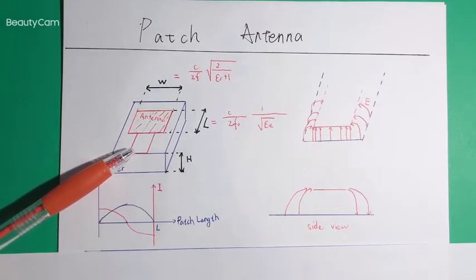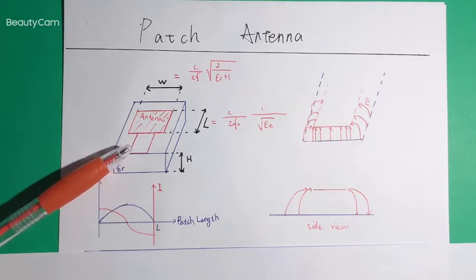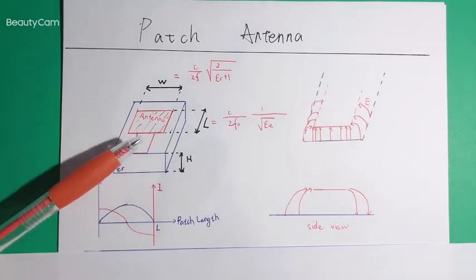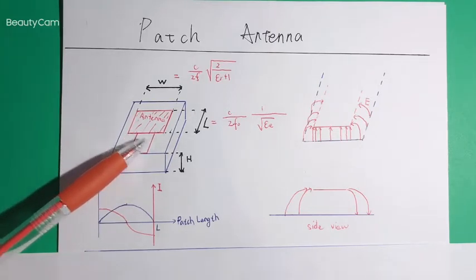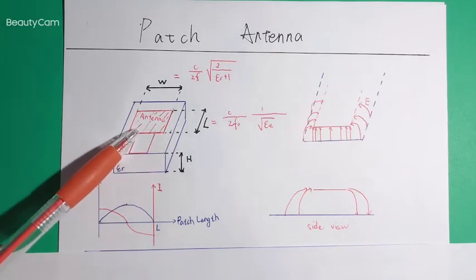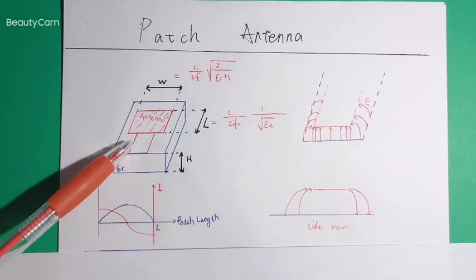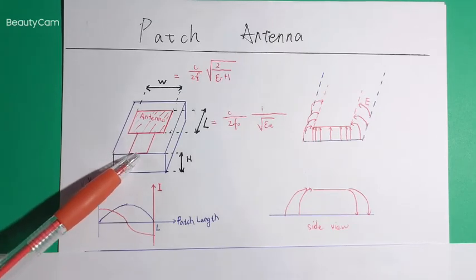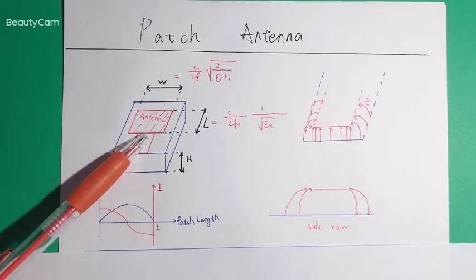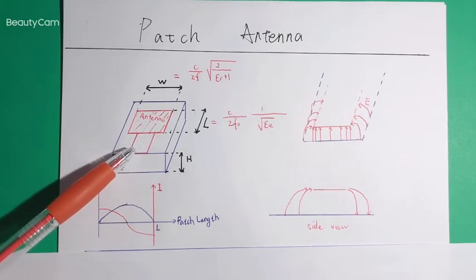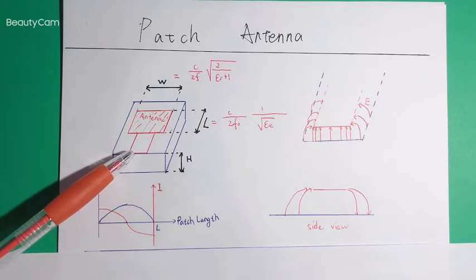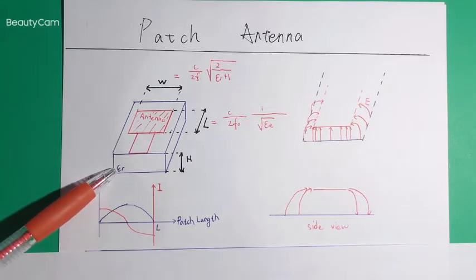It is made by PCB technology. We can lay out an antenna on a substrate and feed by the microstrip line. If we want to design a patch antenna, we need to consider some parameters first, such as the permittivity of the substrate we use.